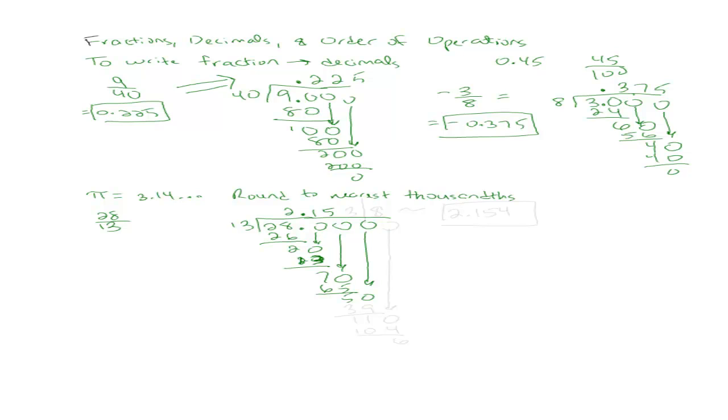Does 13 go into 50? It does. How many times? 3. 3 times 3 is 9, 3 times 1 is 3. Yeah, 4 will put us over. So we get a remainder of 11. Bring down another 0, we get 110. How many times does 13 go into 110? I think we can go higher than 6. 8. Yeah. 8 times 3 is 24, carry the 2. 8 times 1 is 8, and 2 is 10. And we get a remainder of 6. At this point I can stop.